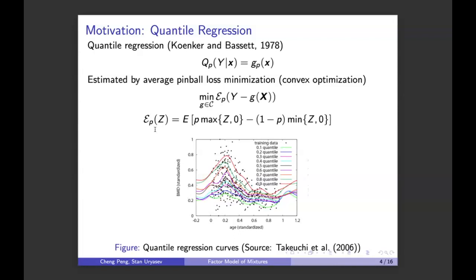One problem is we cannot do all of them — only a limited number — so we don't have a smooth function. The other problem is called quantile crossing: if we do all these quantile regressions separately, the quantile curves at some points would cross each other, which violates the definition of quantiles. If we have 0.1 to 0.9 quantile models, at a fixed point the quantiles should be monotonically ordered, but there's no guarantee for that.